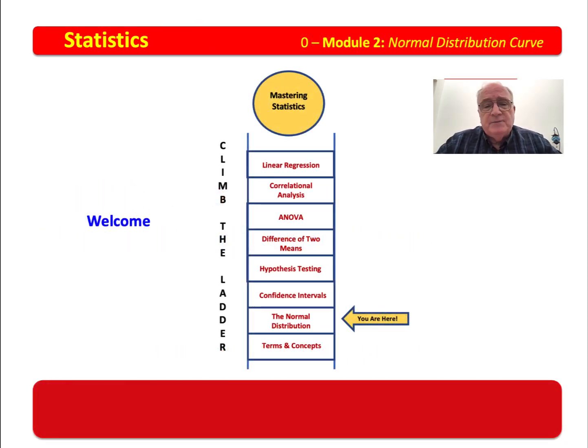We're going to do some different things in this course. We talked about how the course is divided into eight modules. We started with terms and concepts, and you have mastered that, so you've made the first rung. The next rung will be the normal distribution curve, confidence intervals, hypothesis testing, differences of two means, ANOVA, correlation, and linear regression.